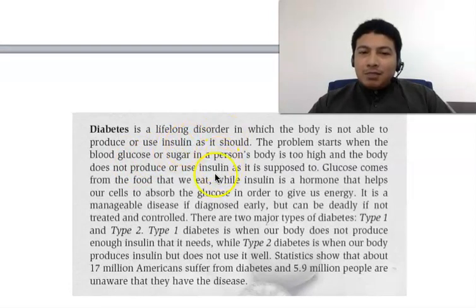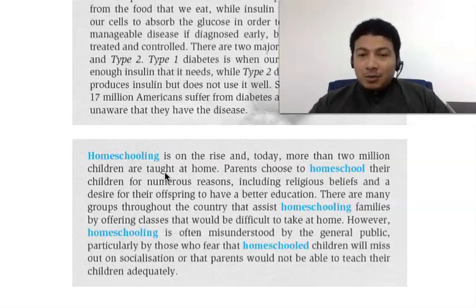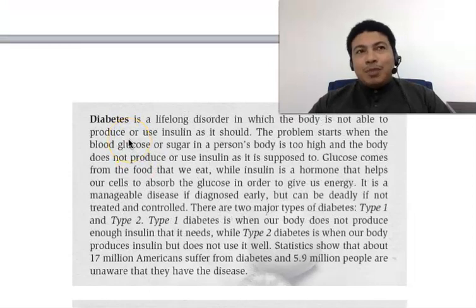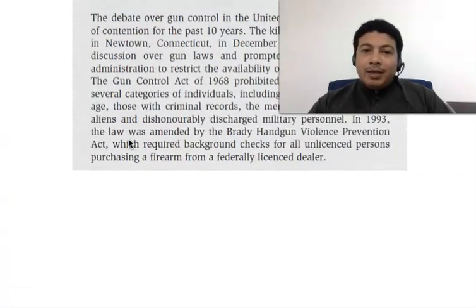The stated main idea of the diabetes passage is that diabetes is a disorder in which the body is not able to produce or use insulin as it should. For the homeschooling paragraph, the stated main idea is that homeschooling is on the rise and today more than 2 million children are taught at home. You can also use your own words — for example, 'homeschooling is getting more and more popular nowadays.'